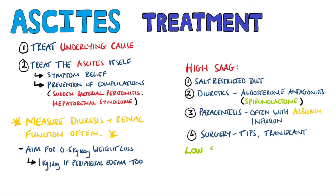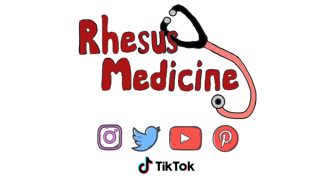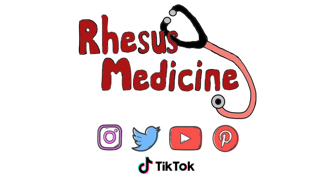Low serum ascites albumin gradient cases usually do not respond well to diuretics or salt restriction, and the treatment is therefore mainly repeated paracentesis and the removal of the underlying cause.